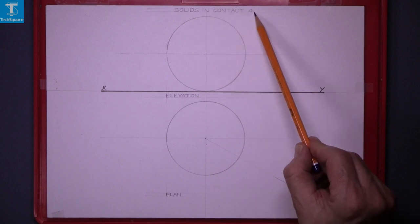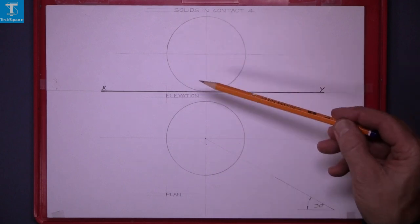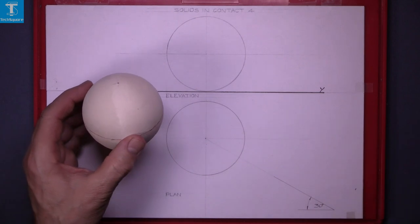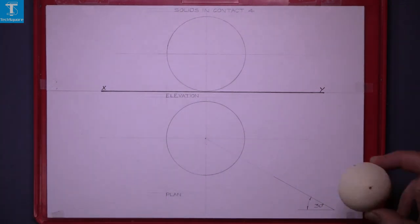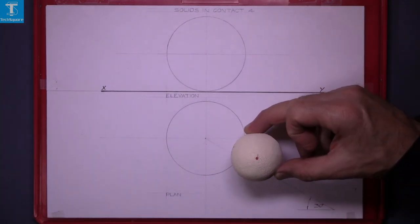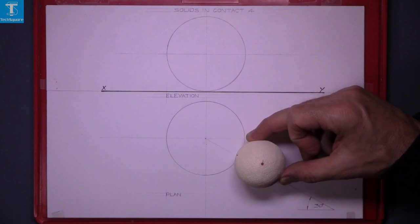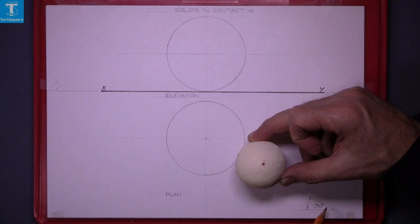Solids in Contact 4. Here we have the elevation and plan of a sphere. We are asked to draw a smaller sphere in this position with the center directly over this 30 degree line.